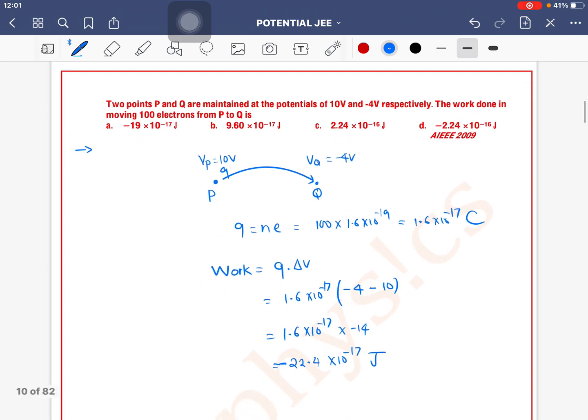Minus sign, so minus 22.4 into 10 to the power minus 17 joule.